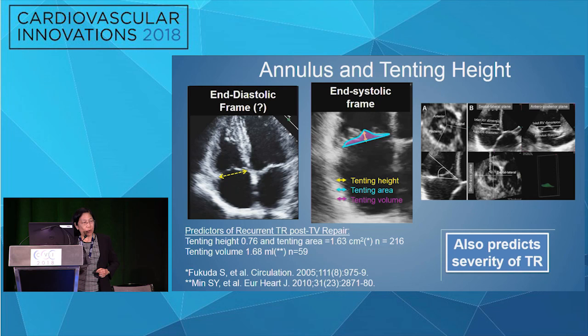It's not just about the annulus — it's now about leaflet tethering and the right ventricle. Tenting volume is done on three-dimensional echo and reflects the importance of both annular and subvalvular pathology.